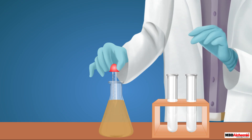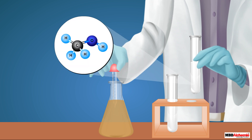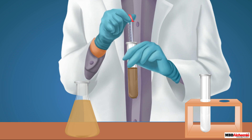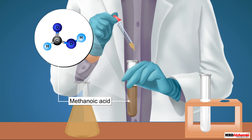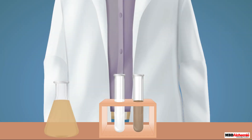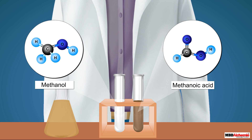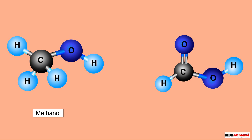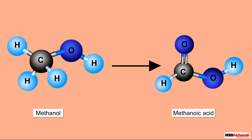Shown here is a test tube containing a carbon compound, methanol. On adding alkaline potassium permanganate to the test tube, another compound called methanoic acid is formed. On comparing the structure of methanol and methanoic acid, we can see that a methanol molecule has only one oxygen atom attached to the carbon atom, whereas in a molecule of methanoic acid there are two oxygen atoms attached to the carbon atom. So we can say that methanol undergoes oxidation in the presence of alkaline potassium permanganate to give methanoic acid.